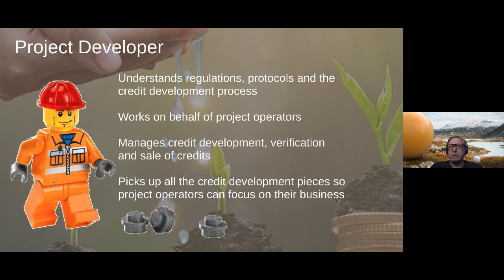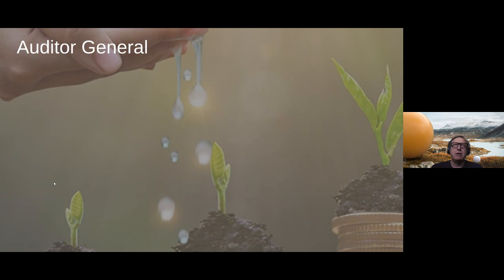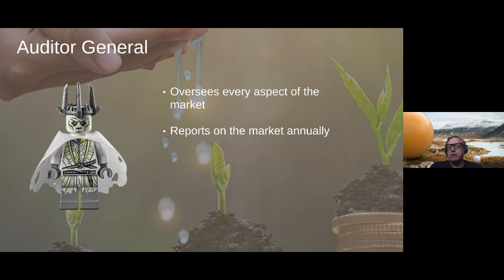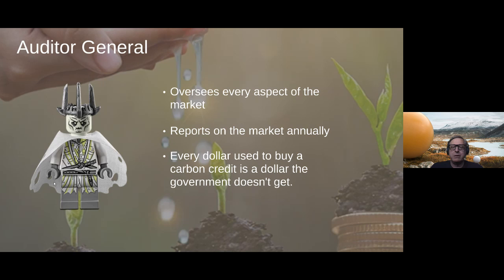The last and very important stakeholder is the Auditor General, who oversees every aspect of the market and reports on it annually in Alberta. One of the reasons the Auditor General's role is so pivotal is that every dollar used to buy a carbon credit is a dollar the government doesn't get. This is a market opportunity created by the government — they could have simply taxed everybody, but instead chose to create a structure where there was an incentive to create emission reductions so that you could get paid for the reductions created.